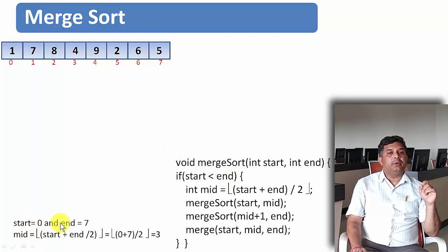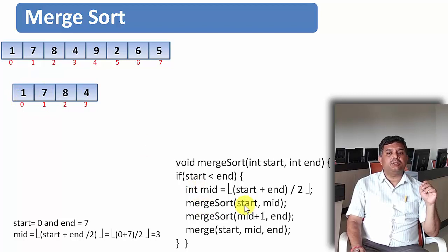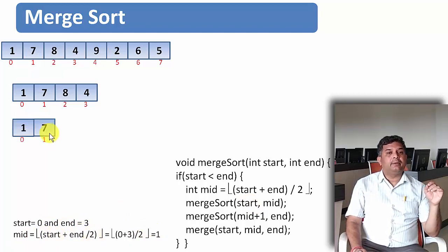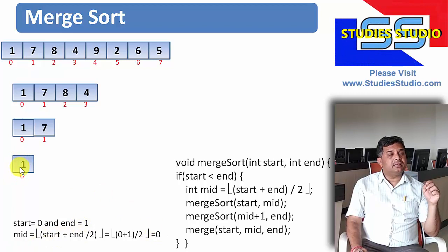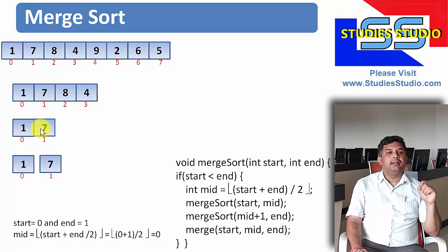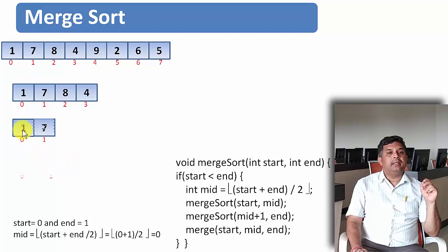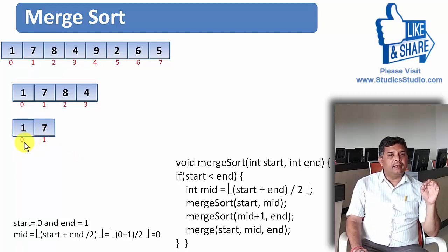Starting with start=0 and end=7, mid=3, so 0 to 3 is one list. Applying merge sort with start=0, end=3 gives mid=1, so 0 to 1 is the next list. With start=0 and end=1, mid=0, giving us single elements. Single data is already sorted, so we merge these two to get the sorted list [1, 7] at locations 0 and 1. The second half of this partition has start=2, end=3, mid=2, giving us elements 8 and 4 as single items, which we merge to get [4, 8] at locations 2 and 3.